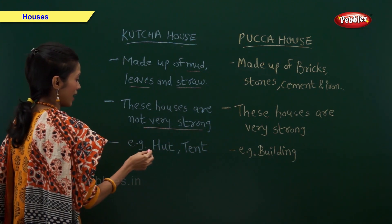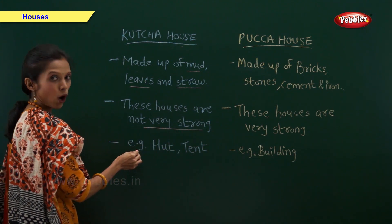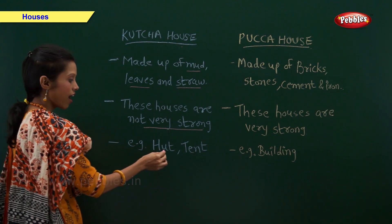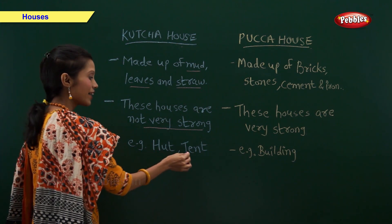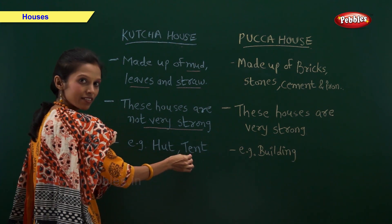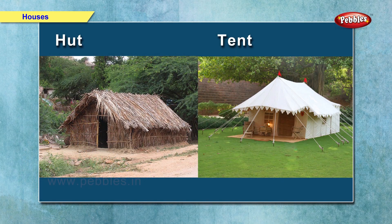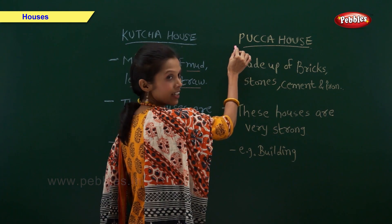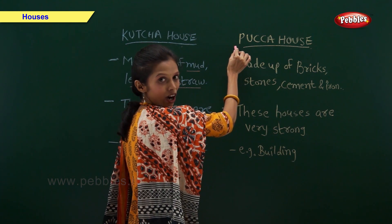An example of Kaccha houses are huts and tents. Second, Pakka house.